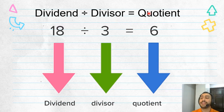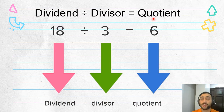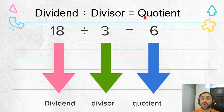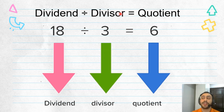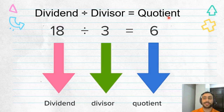And the answer is called quotient. Quotient. So, dividend divided by divisor equals quotient. Six is the quotient here.